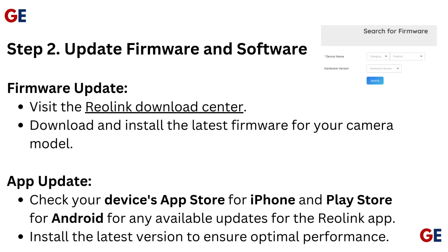Step 2: Update firmware and software. For a firmware update, visit the Reolink download center and download and install the latest firmware for your camera model. For an app update, check your device's App Store for iPhone or Play Store for Android for any available updates for the Reolink app, and install the latest version to ensure optimal performance.